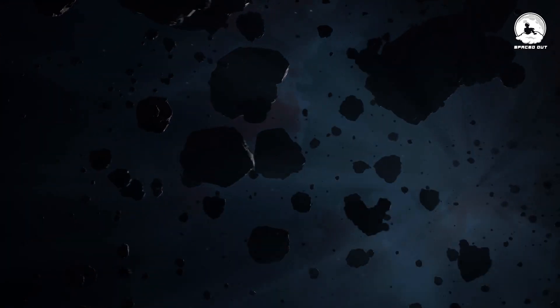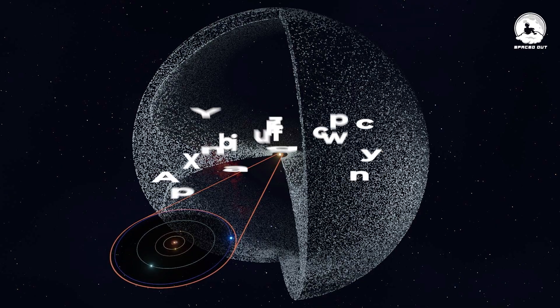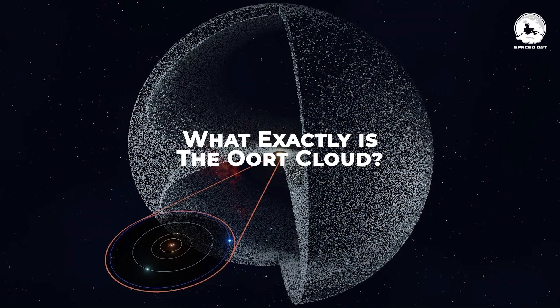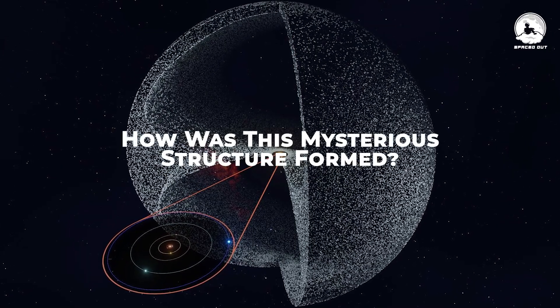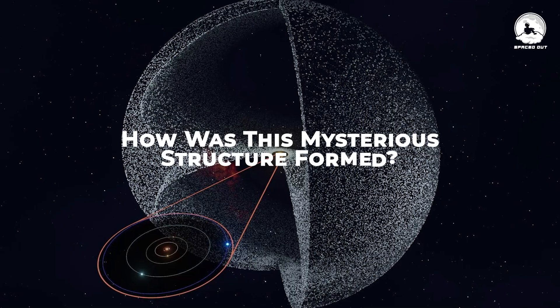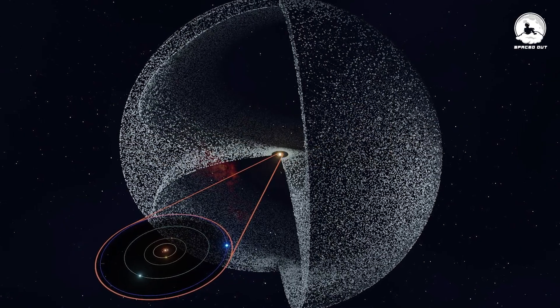This cloud is thought to be teeming with billions and trillions of comets and various other objects. So, what exactly is the Oort Cloud? How was this mysterious structure formed? Let's find out.